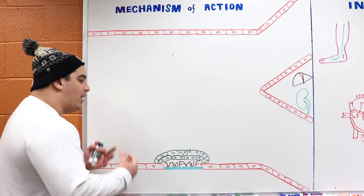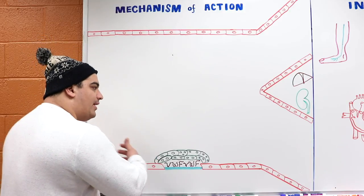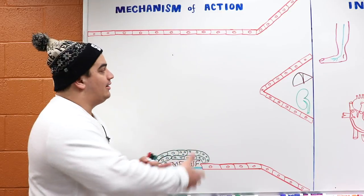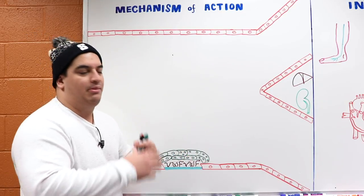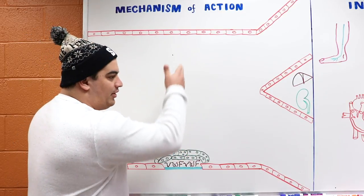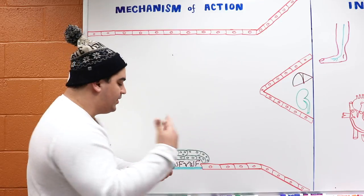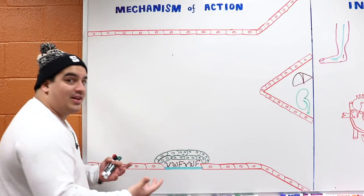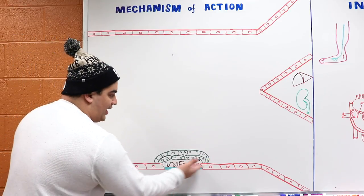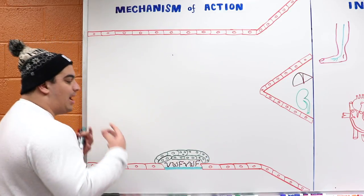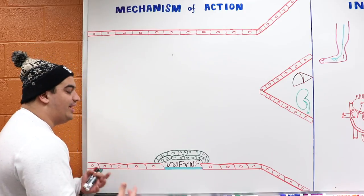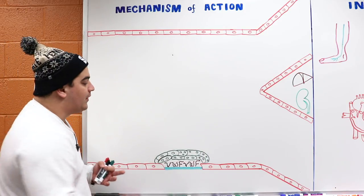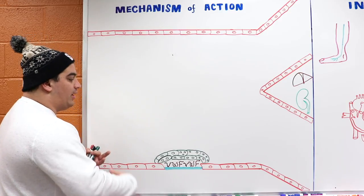If you know the mechanism of how coagulation actually occurs, then the mechanism of action of heparin is going to be simple and you'll understand the downstream effects. Whenever there's damage to the blood vessel, injury to the endothelial cells, a hypercoagulable condition, or stasis of blood flow — Virchow's triad — there's an increased risk of forming thrombi.